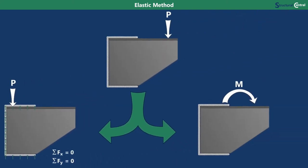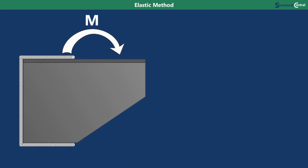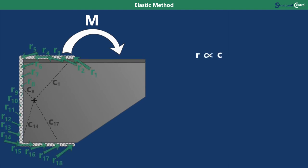Now we'll move on to the concentrated moment. For this type of loading, the key principle is that the magnitude of the reaction force per unit length R at any point along the weld is proportional to its distance from the centroid of the weld C. This makes sense since the weld will be rotating around the centroid, so the further a point is from the centroid, the more deformation it will see due to the rotation. The direction of the reaction at each point will then be perpendicular to a line going from the centroid to that point.